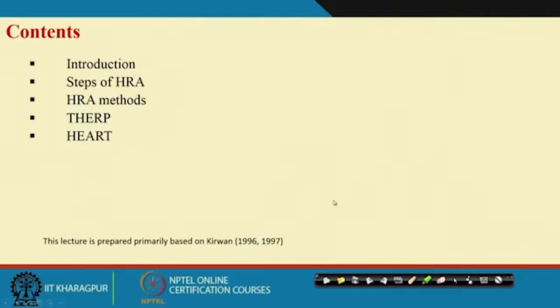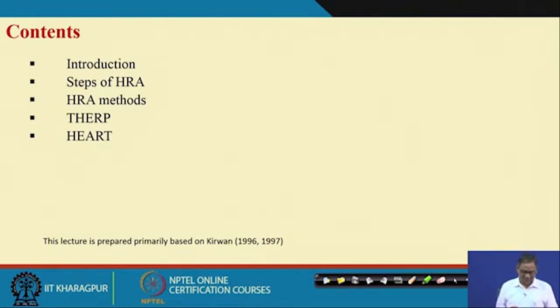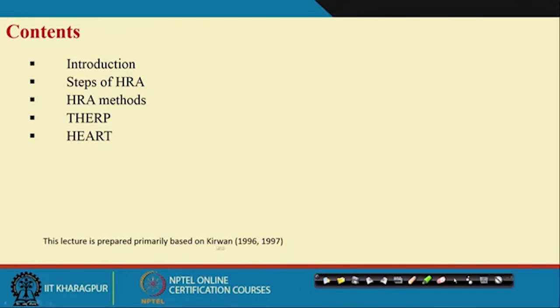Hello everybody. Today we will discuss human reliability assessment. Today's presentation includes an introduction to the steps of human reliability assessment, then different human reliability assessment methods. We will discuss two important methods: one is THERP and another one is HEART. This lecture is primarily based on material given by Kirwan in 1996 and 1997, though we also consulted other books and papers.